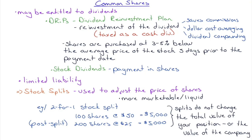A dividend reinvestment plan, or DRIP, means instead of receiving a cash dividend, you receive shares. If you plan on buying more shares anyway, this is powerful. It saves on commissions since the shares are given to you directly. You also dollar cost average — every quarter you buy shares at whatever the current price is, which smooths out your average cost.